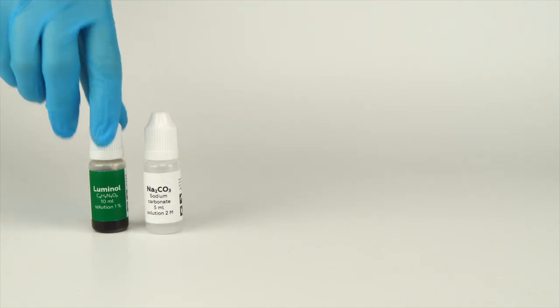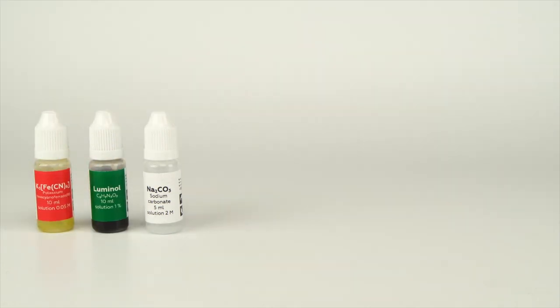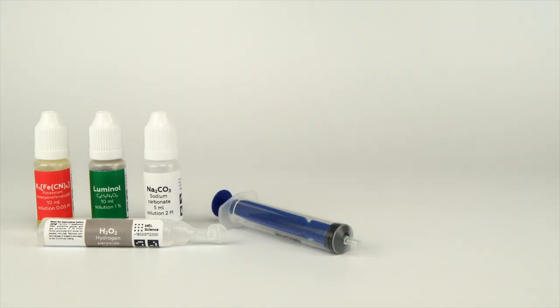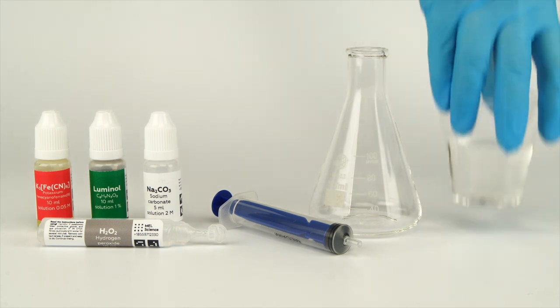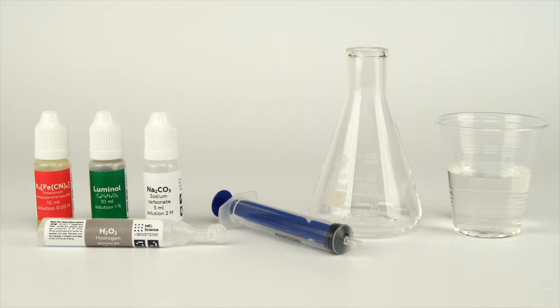For the galaxy in a flask experiment, you will need solutions of sodium carbonate, luminol, potassium hexacyano ferrate, and hydrogen peroxide. Take a syringe from the experiment set and the flask from the starter kit. Also, prepare a cup of water in advance. Conduct this experiment in a room that you can easily make very dark.